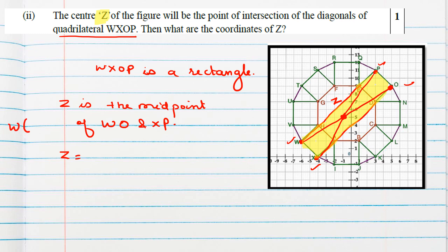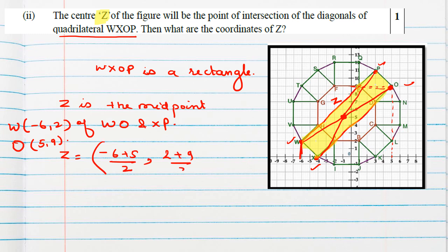Taking diagonal WO: W has coordinates (−6, 2) and O has coordinates (5, 9). The midpoint Z is given by [(−6 + 5)/2, (2 + 9)/2] = (−1/2, 11/2). So the center of the figure Z is at (−1/2, 11/2).